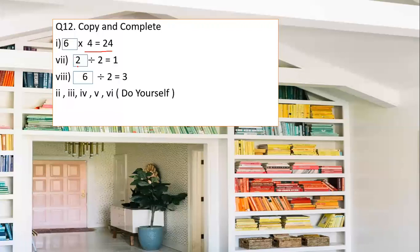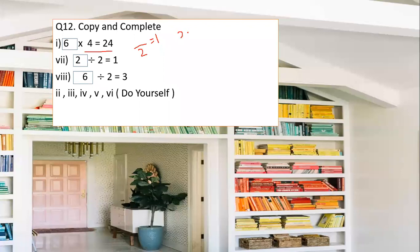Next: blank divided by 2 equals 1. This is a trick — to find the answer, simply multiply the two known numbers: 2 × 1 = 2. So 2 is the answer. You can verify it by substituting back: 2 ÷ 2 = 1. Yes — that is the correct answer.